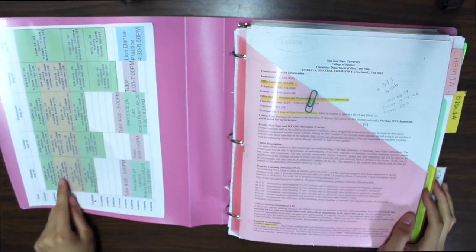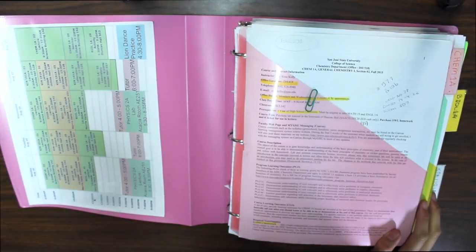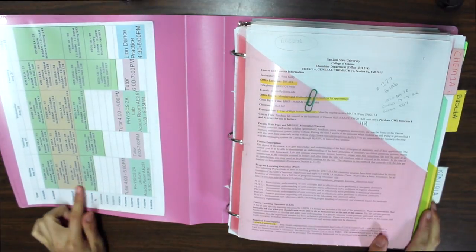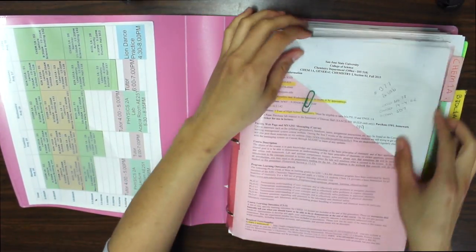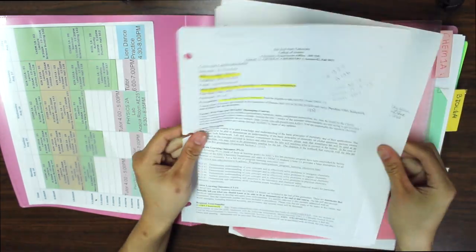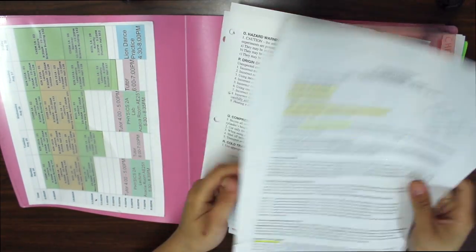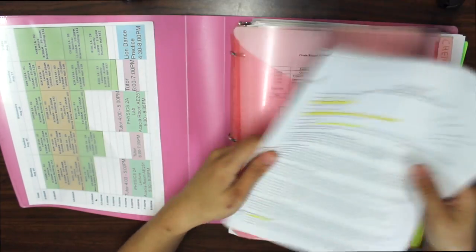I usually have my schedule on the left of my binder where I can easily find it. It actually takes about two weeks to memorize where my classes are when a new semester starts. So I need my schedule right in front of me. For this specific semester, I took four classes, a total of 17 units.